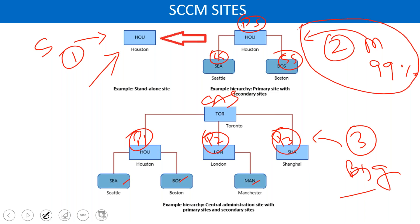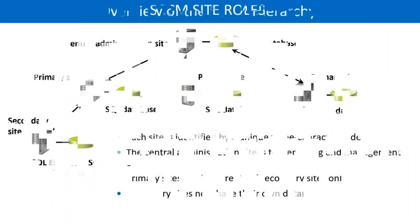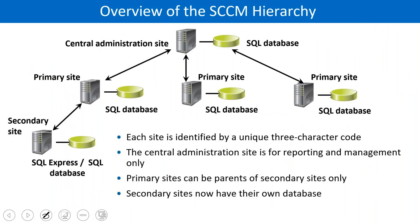Mostly you will find the medium-size architecture — 99% of the time you will have this architecture. You have a database; secondary also has a database, primary has a database, and central also has a database. All the sites have databases, and database replication happens from downward to upward.